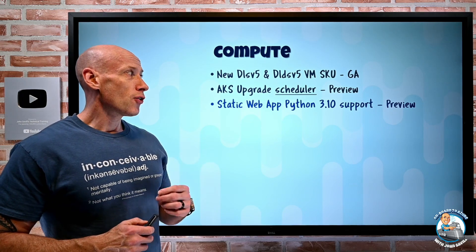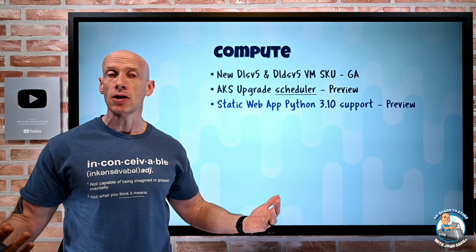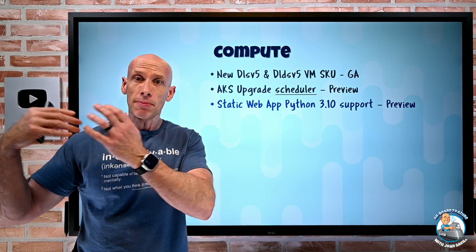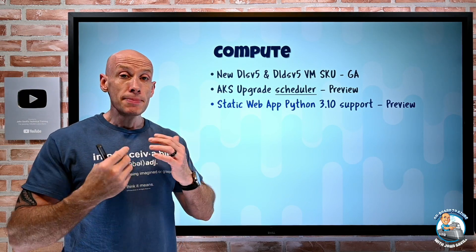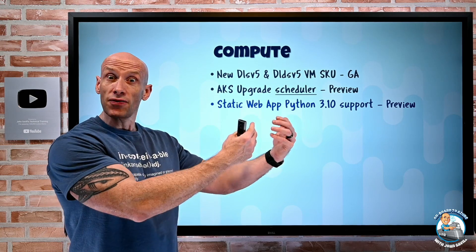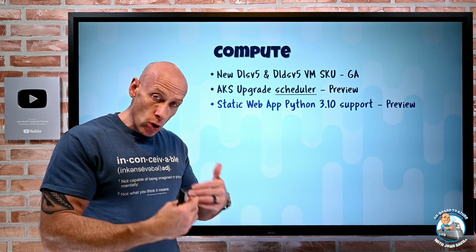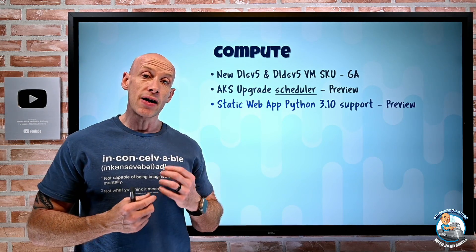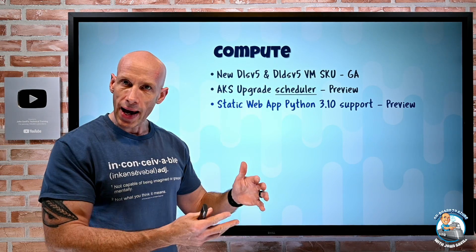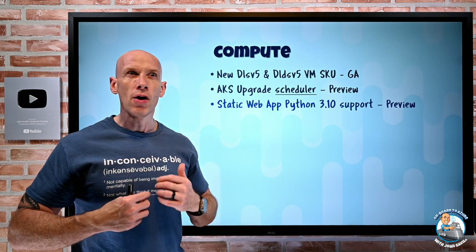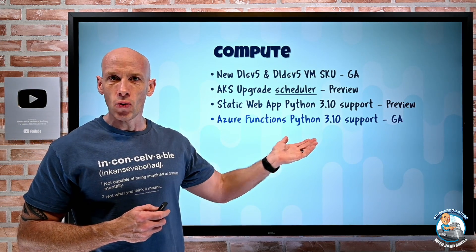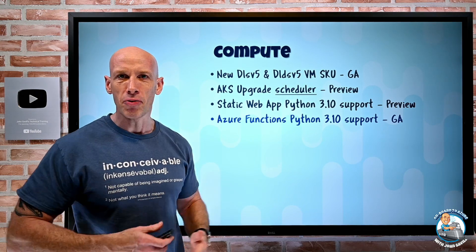Static Web Apps now has Python 3.10 support. Static Web Apps is about pre-generated content — HTML, CSS, images, JavaScript — but it also has managed functions for server-side processing, callable via a relative path. It will build and deploy that function for you. Now if that managed function is Python, it can be 3.10. Azure Functions also now has Python 3.10 support in GA, which is required to call it from an Azure Static Web App.